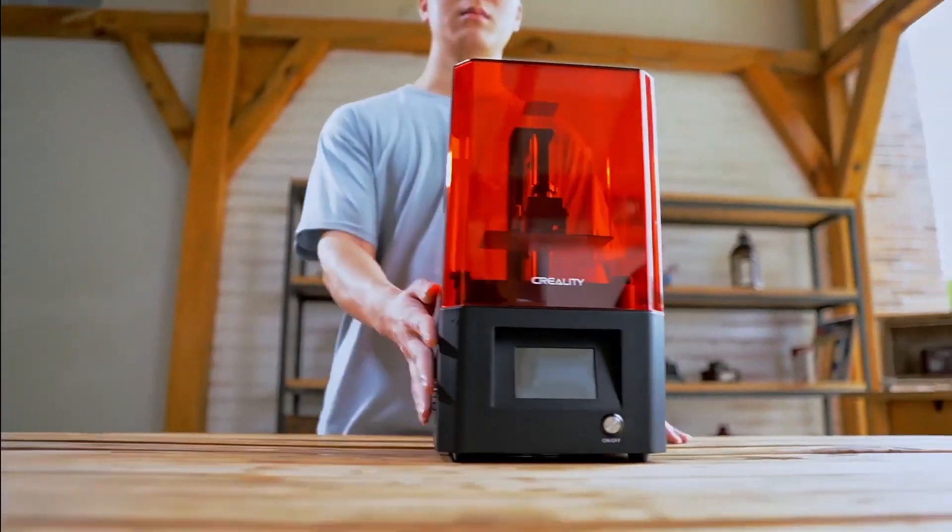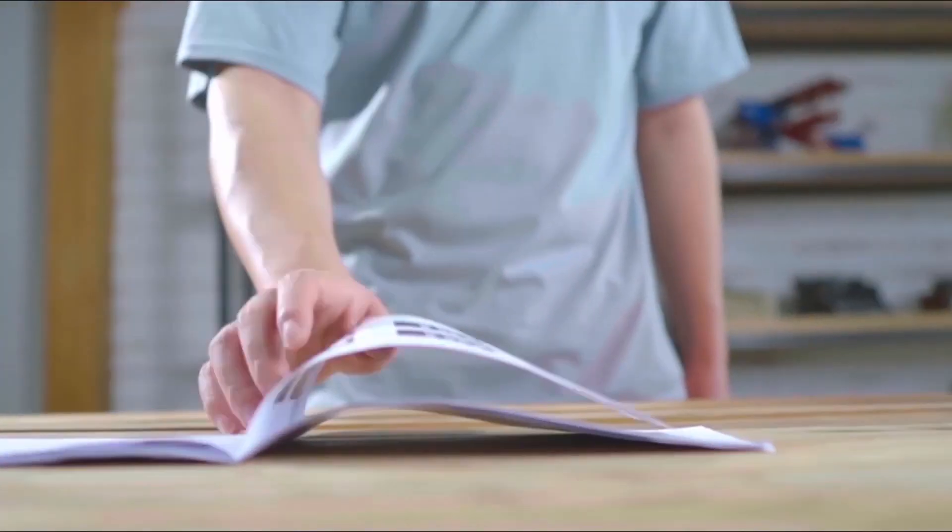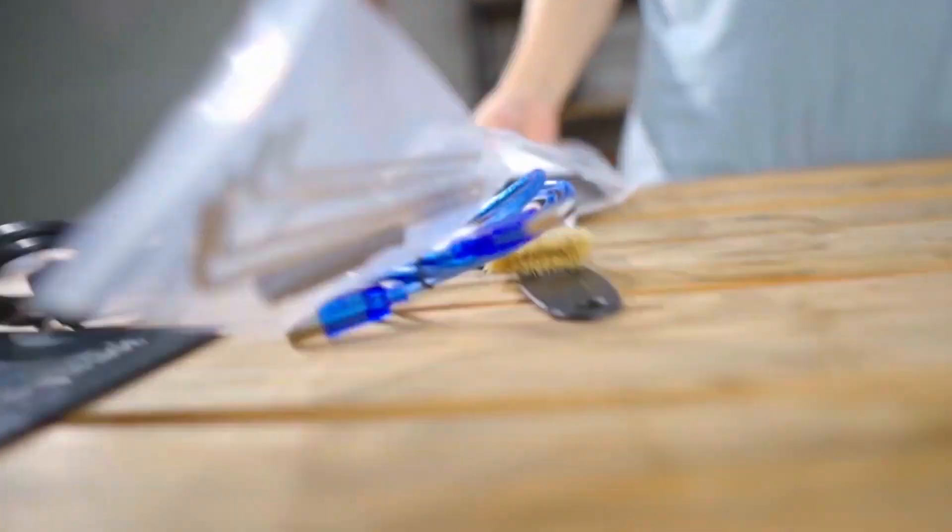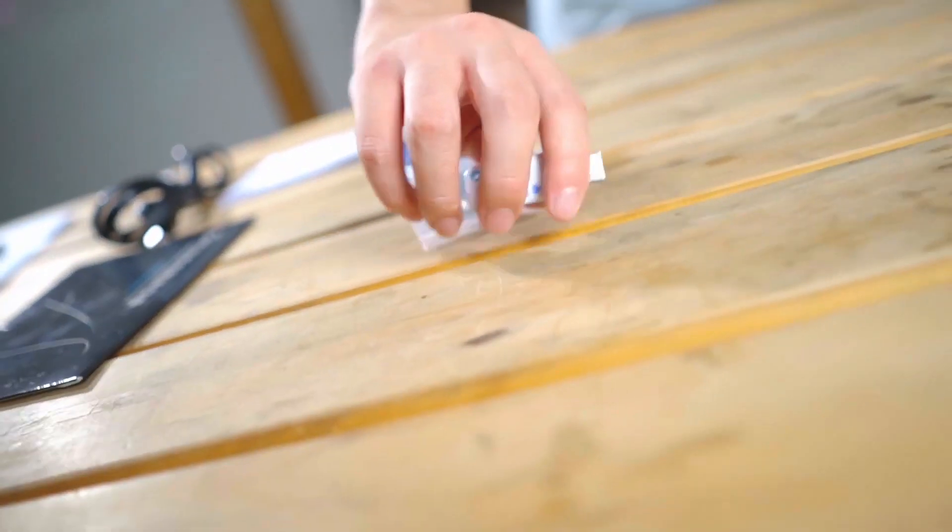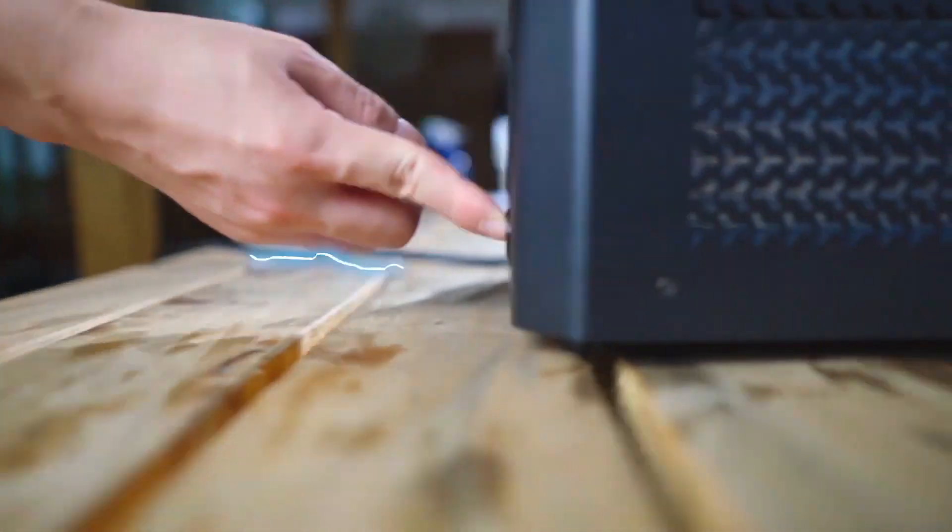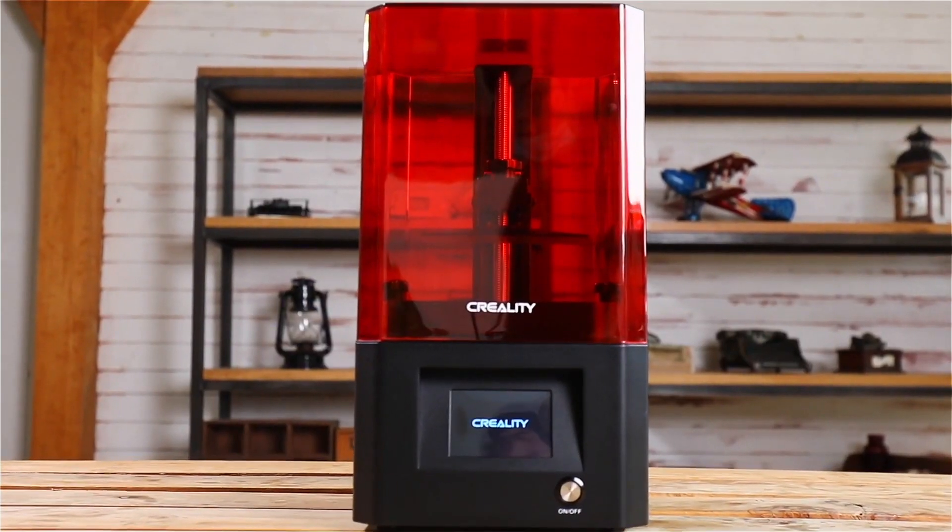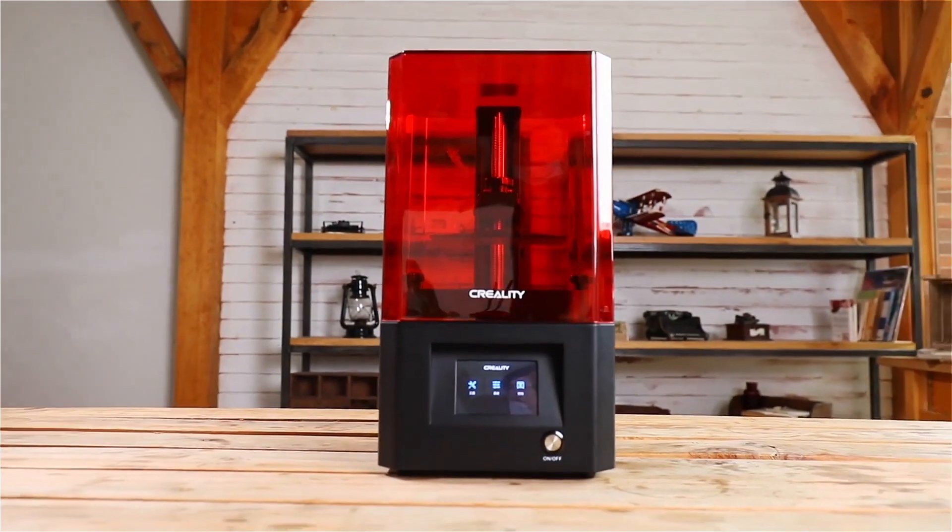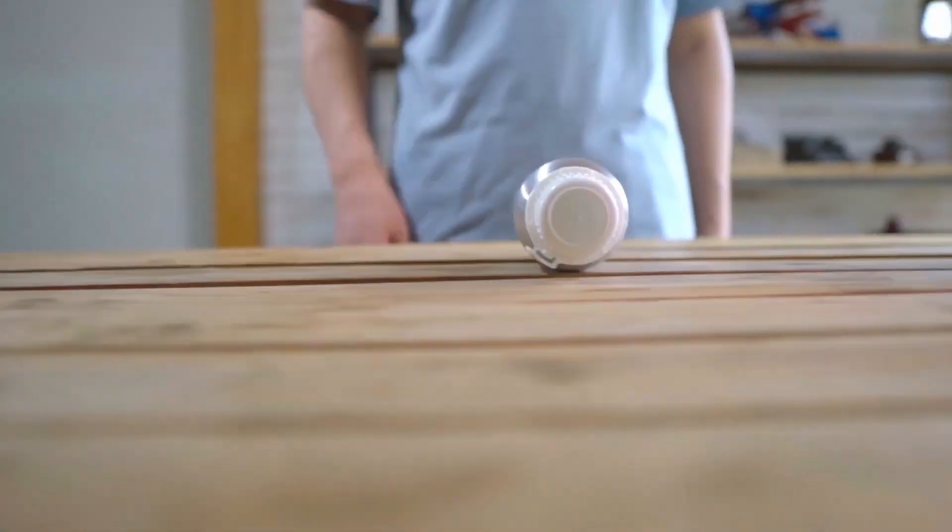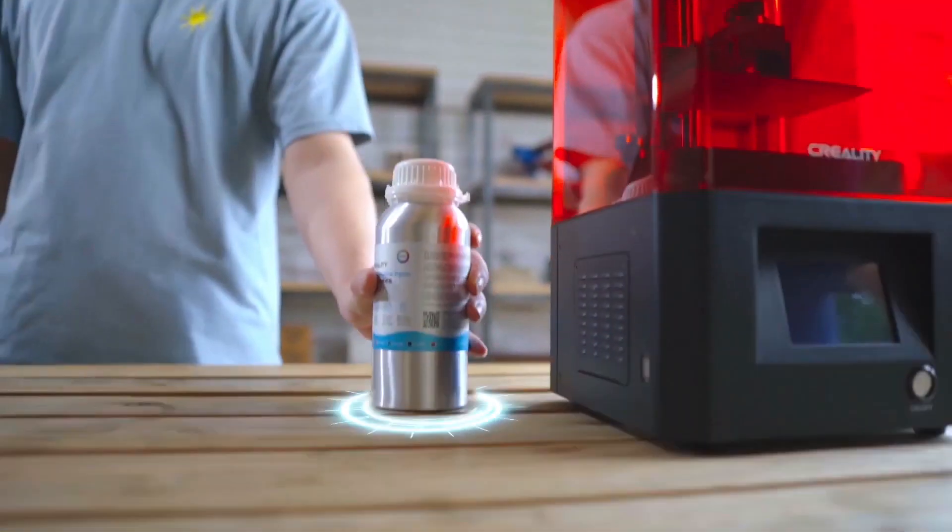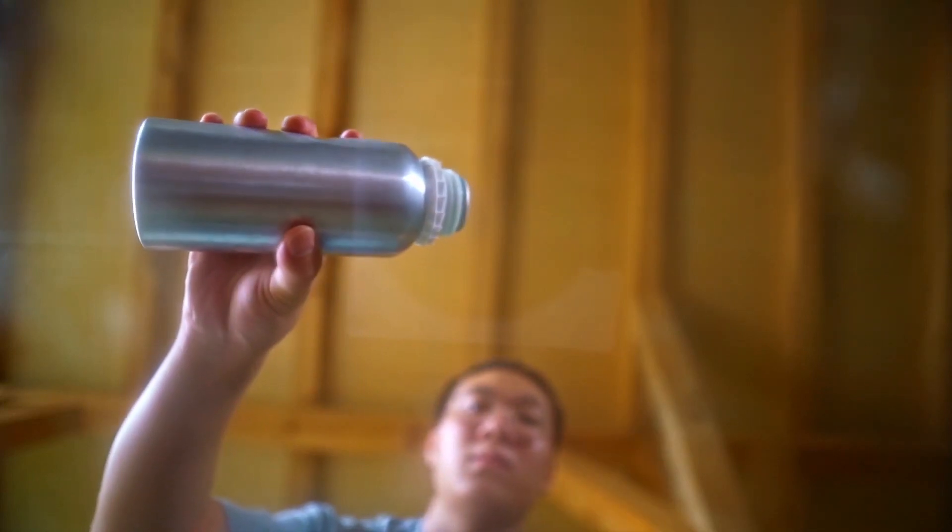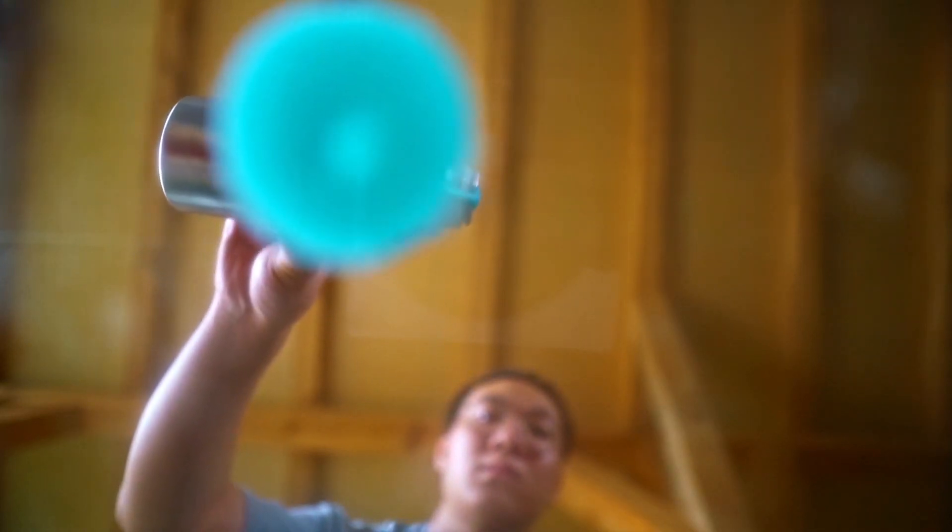For number 2, the Creality LD-002H. This is an upgraded version of Creality's previous SLA model with much faster curing times. This printer has a 2K monochromatic LCD display with much faster printing times. It has a build volume of 130x82x160mm and has a selling price of $249.